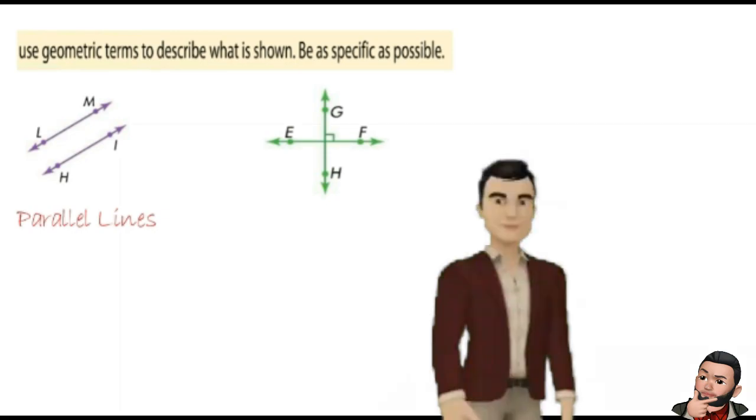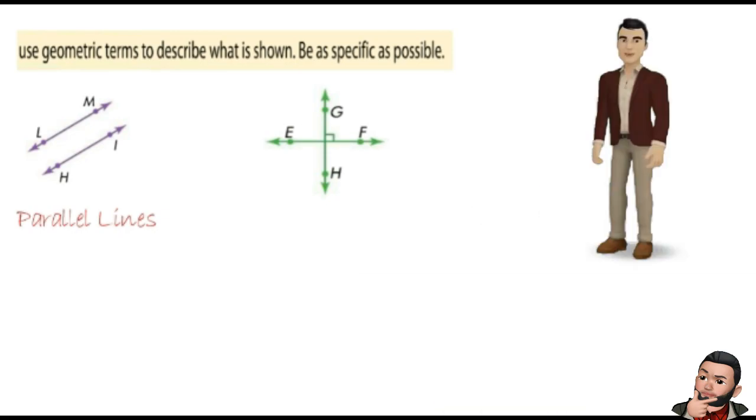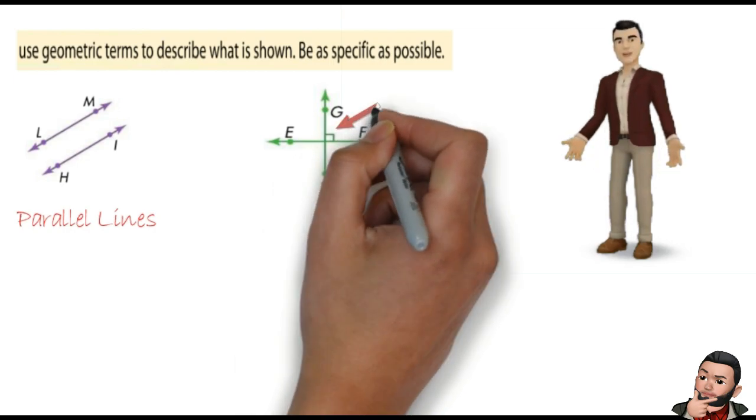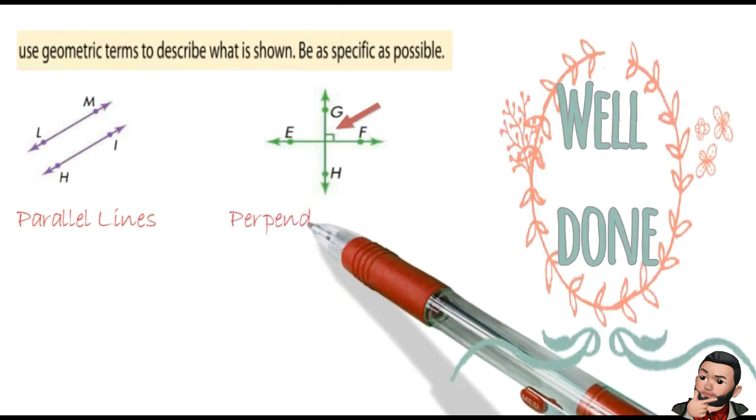Teacher, teacher, can I answer it? Go ahead. Of course, the two lines intersected. But we have one more condition here, that the two lines met at 90 degrees, so they are perpendicular lines. Well done.